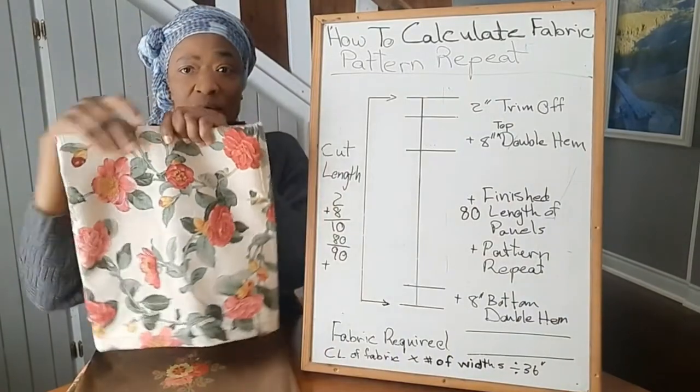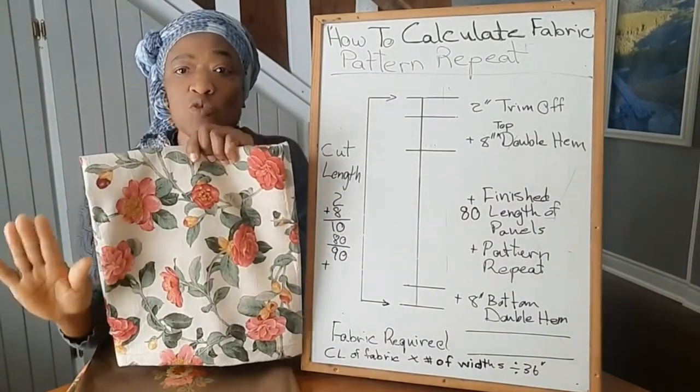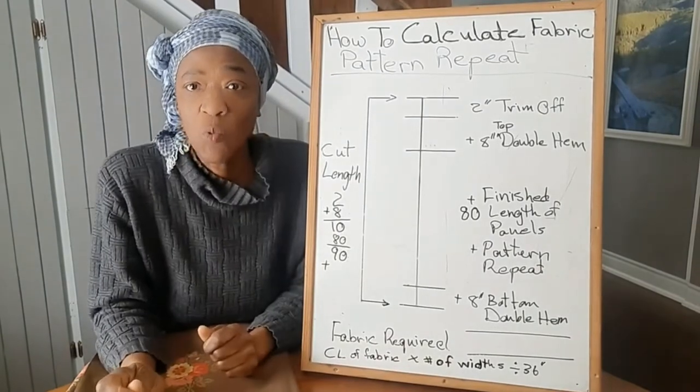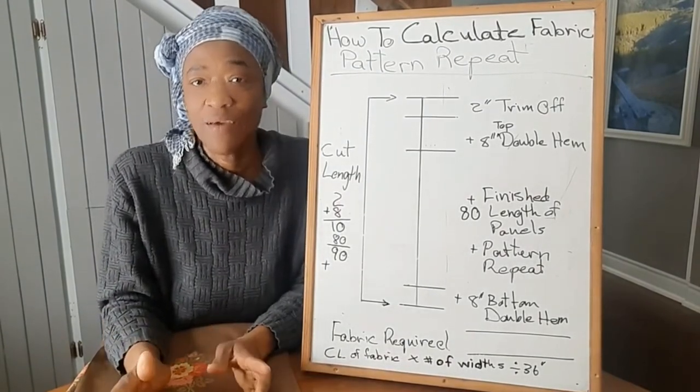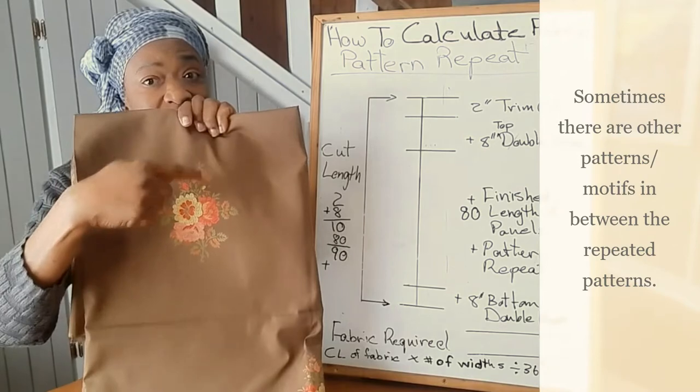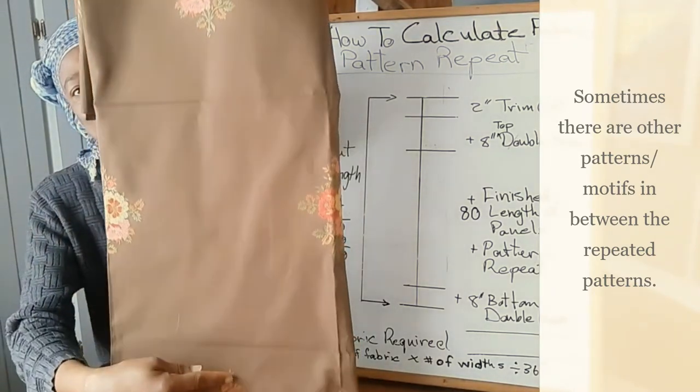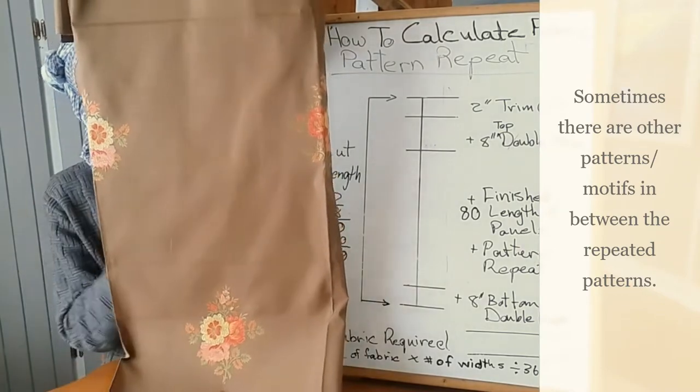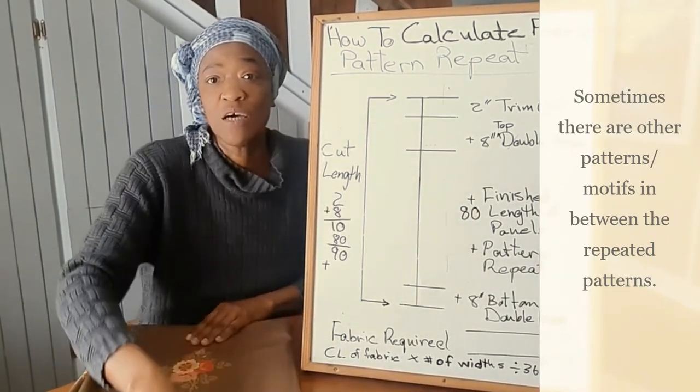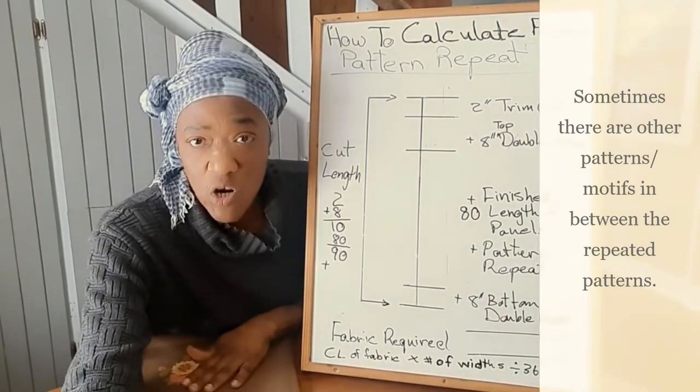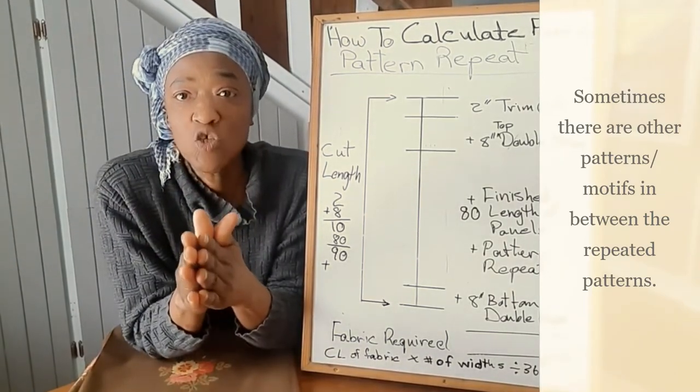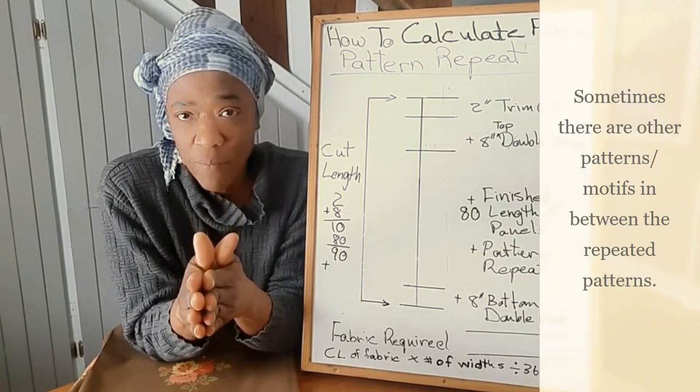Now if you are using a pattern fabric that has an all over pattern, you don't have to concern yourself with pattern repeat. Pattern repeat comes in when you have chosen to use a fabric that has a distinct pattern repeat, which means that your pattern starts and stops, and then there is a gap, and then your pattern starts and stops again. So there is a distinct difference on where the patterns are. They repeat themselves throughout the fabric, therefore you need to take that into consideration.